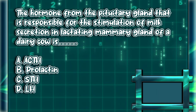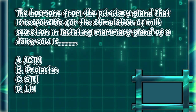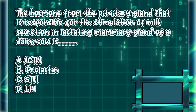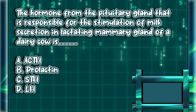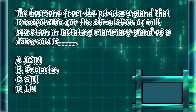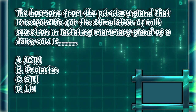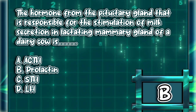The hormone from the pituitary gland responsible for the stimulation of milk secretion in the lactating mammary gland of a dairy cow is: a) ACTH, b) prolactin, c) STH, d) LH. The answer is letter B.